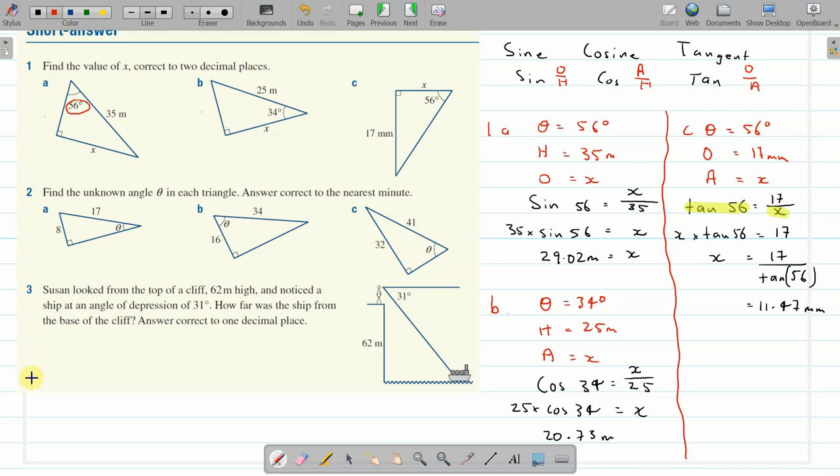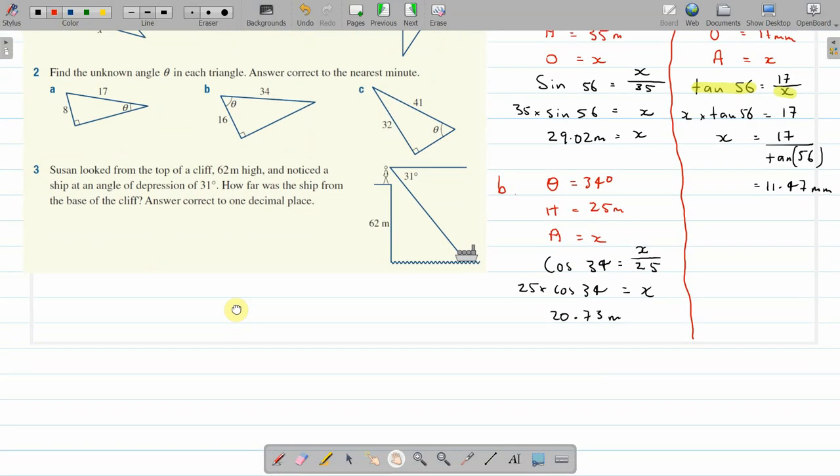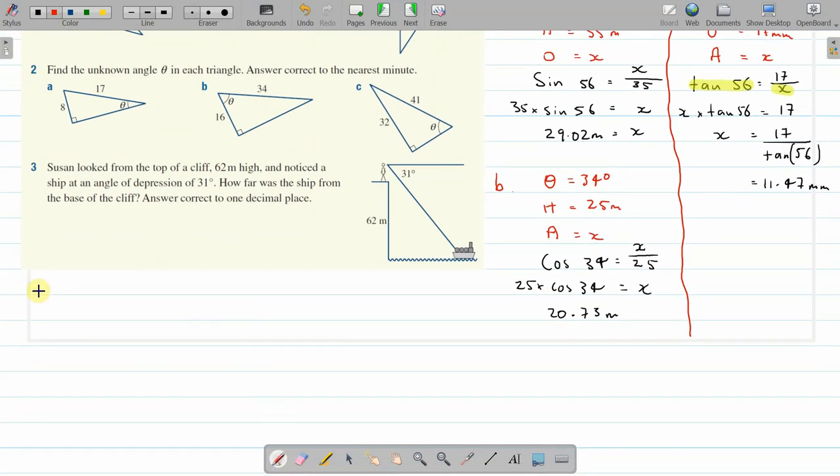All right, question 2. A, B, and C. Finding the unknown angle. So finding the unknown angle, we have to press shift on the calculator. Here, press shift. That comes into play when you're doing the angles.